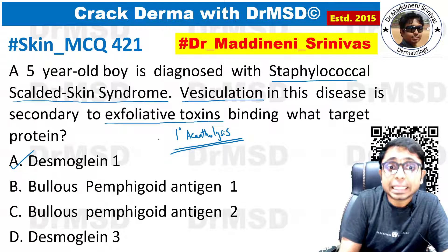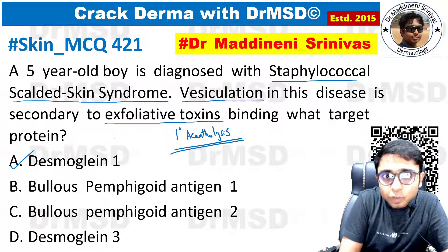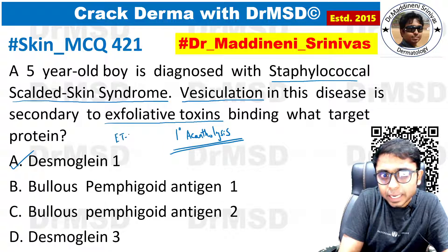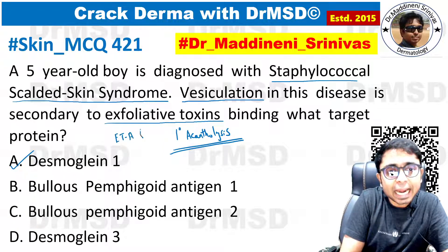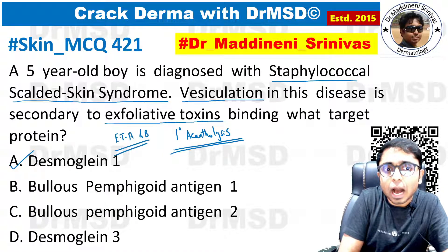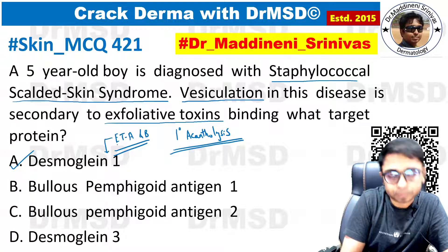In this bacterial condition — staphylococcal scalded skin syndrome — exfoliative toxin A and exfoliative toxin B are responsible for damaging and destroying desmoglein 1.